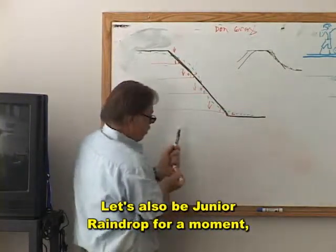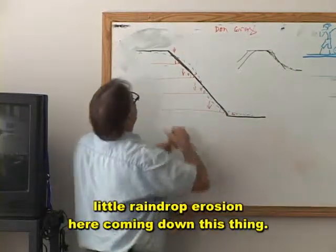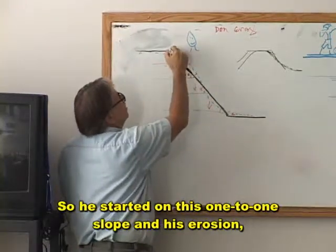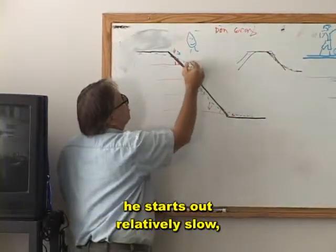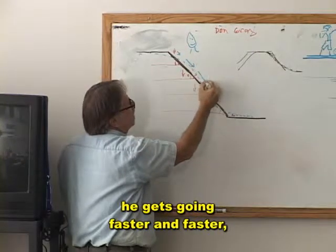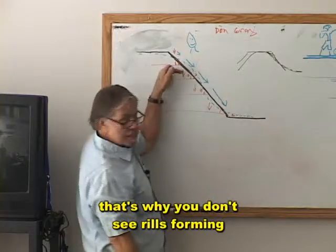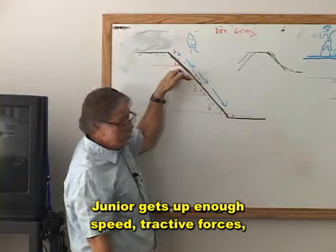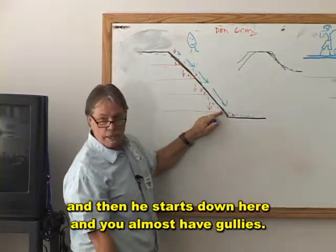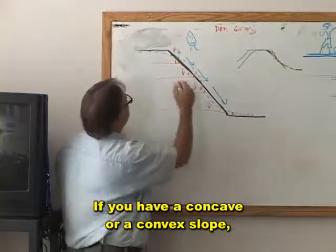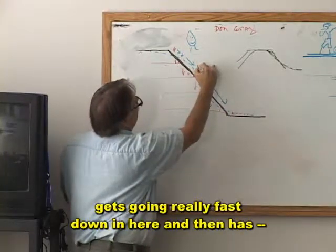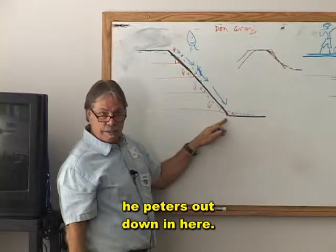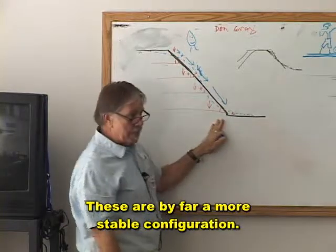Let's be Junior raindrop for a moment — a little raindrop erosion coming down the slope. He's starting on this one-to-one slope, starting out relatively slow, getting faster and faster. That's why you don't see rills forming until you get down about a third of the slope. Junior gets up enough speed and attractive forces, and then you almost have gullies at the bottom. If you have a concave or convex slope, Junior starts out slow, gets going really fast in the middle, and then peters out at the bottom. These are by far a more stable configuration.